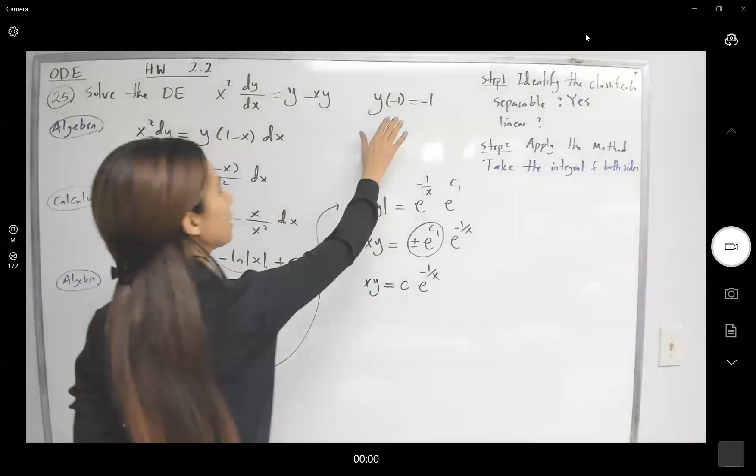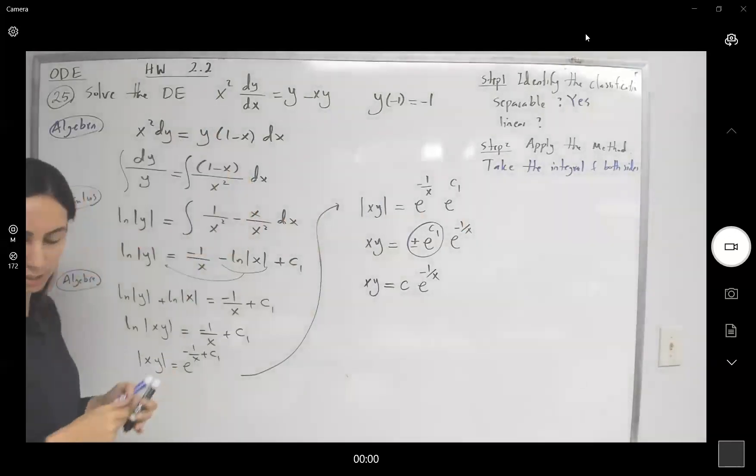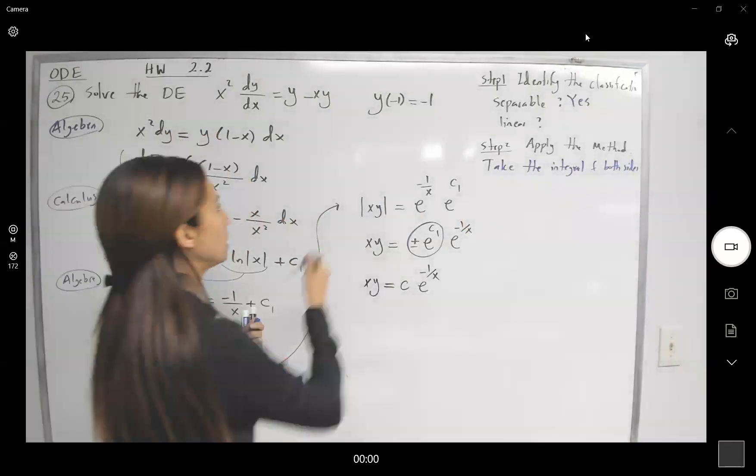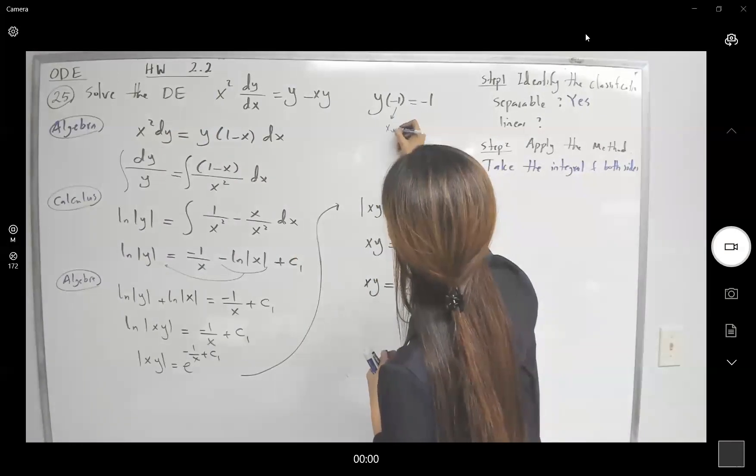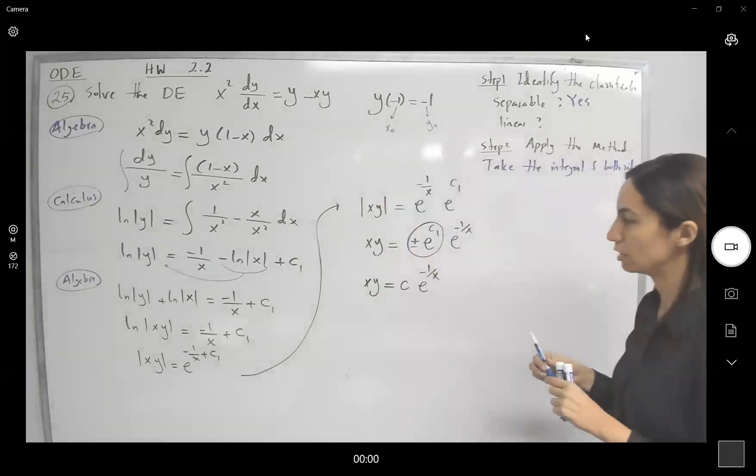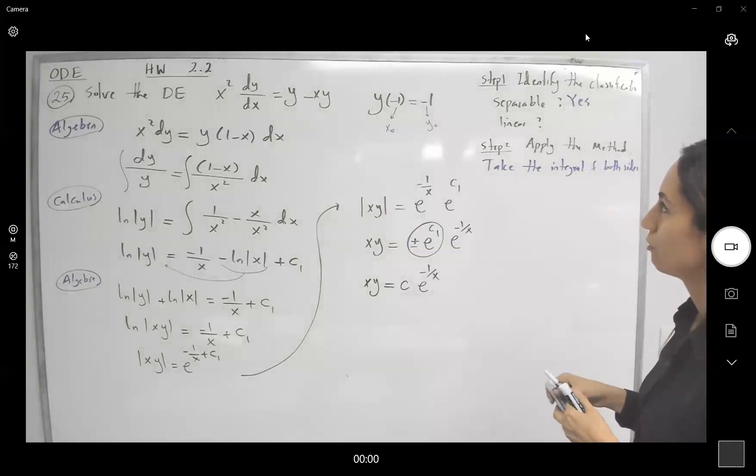So how do we apply the initial value problem? Well, wherever you see x is negative 1, your y must be negative 1. So let's see what we have here. When x is negative 1, y is negative 1.